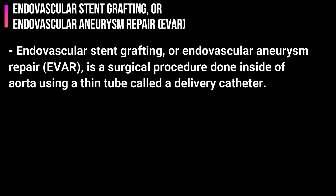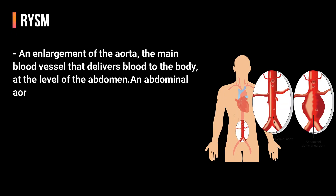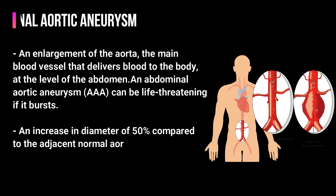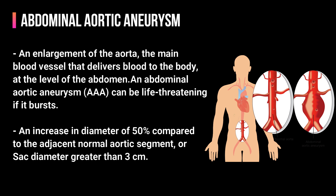Abdominal aortic aneurysm is an enlargement of the aorta, the main blood vessel that delivers blood to the body, at the level of the abdomen. An abdominal aortic aneurysm can be life-threatening if it bursts. It is defined as an increase in diameter of 50% compared to the adjacent normal aortic segment, or a sac diameter greater than 3 centimeters.